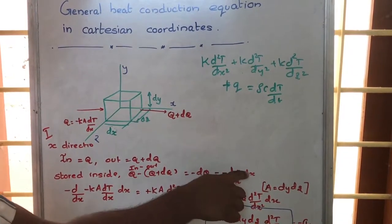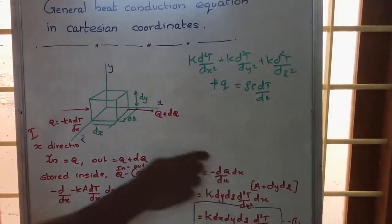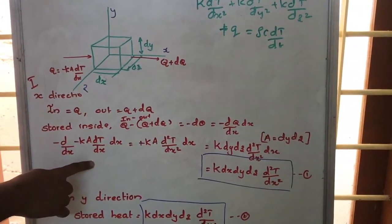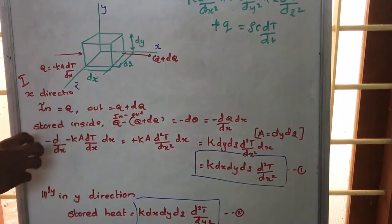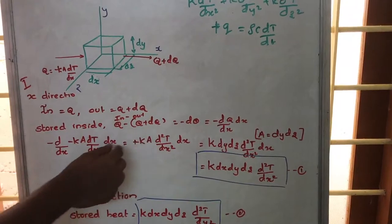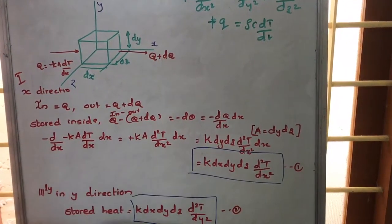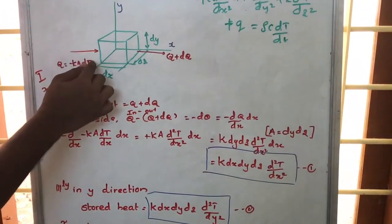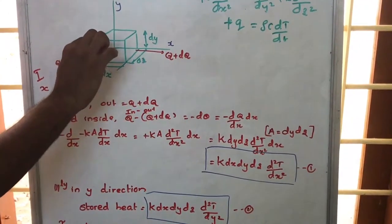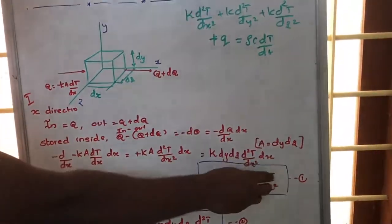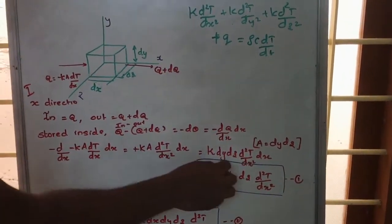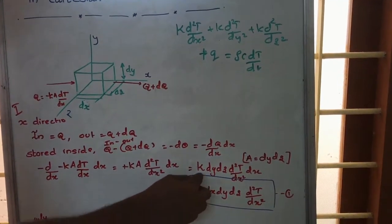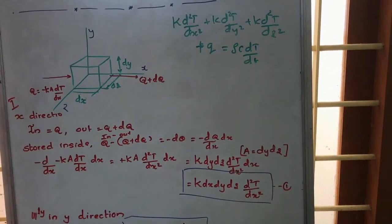We multiply and divide minus dq by dx. We know q is equal to kA dT/dx, so substituting, we get minus kA dT/dx. Since k and A are constant, we take them out. Then d/dx of dT/dx is written as d²T/dx². The area of cross-section in the x-direction is dz times dy, so A equals dy·dz. Therefore, in the x-direction, the energy stored is k·dx·dy·dz·(d²T/dx²).